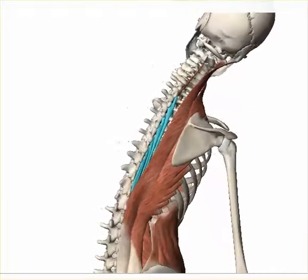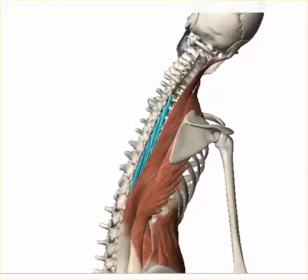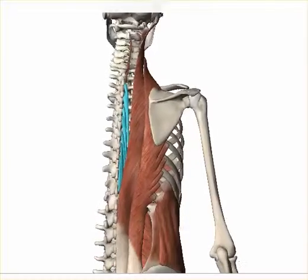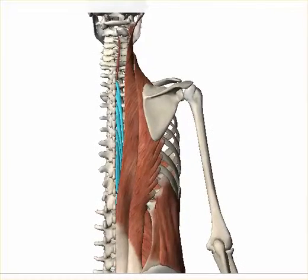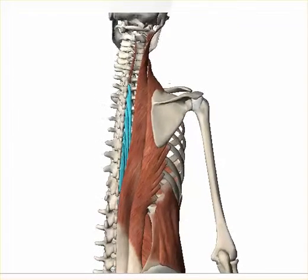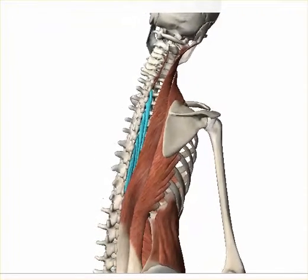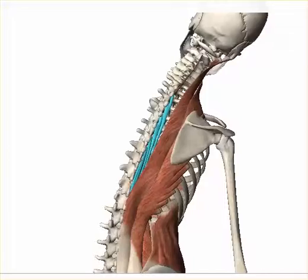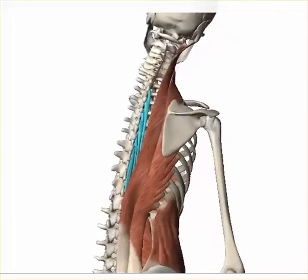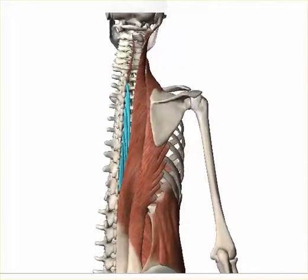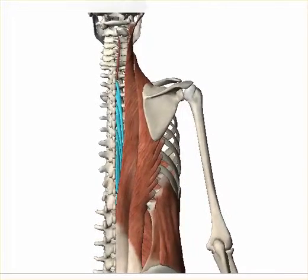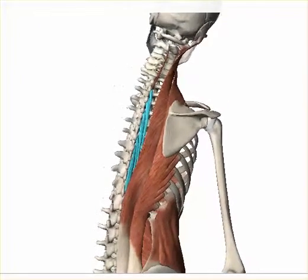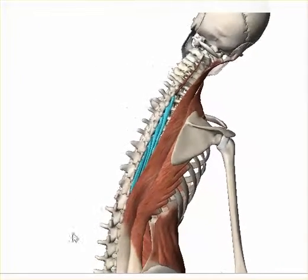These muscles are organized into global muscles and local muscles. Global muscles span multiple vertebrae, while local muscles go from vertebra to vertebra, or maybe skip one vertebra. The main global muscle is called the erector spinae.